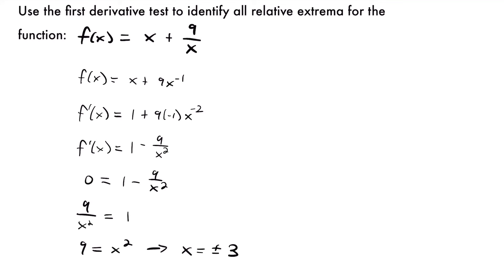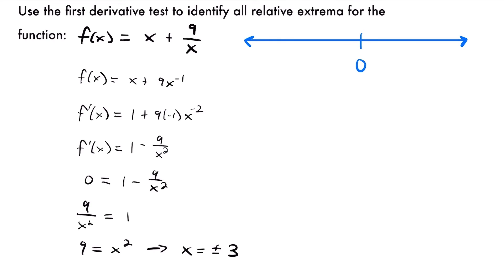Now I'm going to draw our number line, but there's one more thing we need to do because of this particular function. If you have a function with a point of discontinuity — a point where your function is not defined — you want to take note of that. Although it's not a critical point, there's a potential that the slope of the graph could change sign there. Since we have a variable in the denominator, setting that denominator equal to zero gives x equals 0. So we need to mark that on our number line as well, along with our critical values of negative 3 and positive 3.